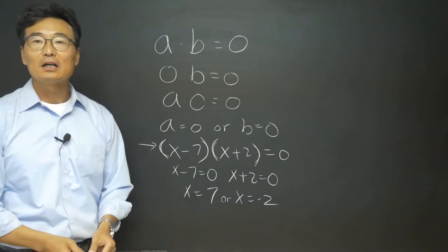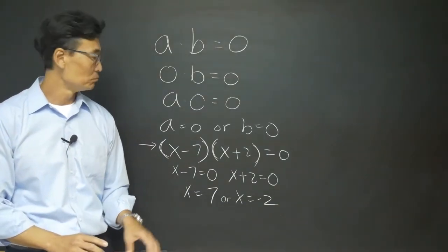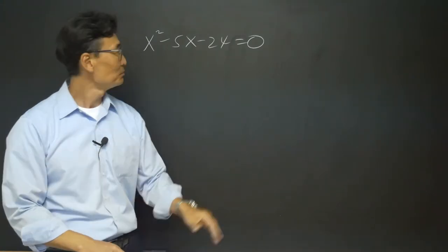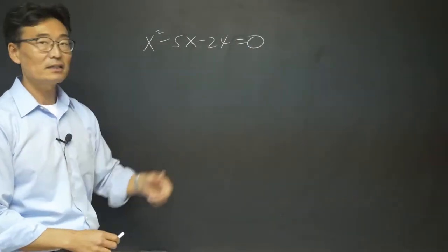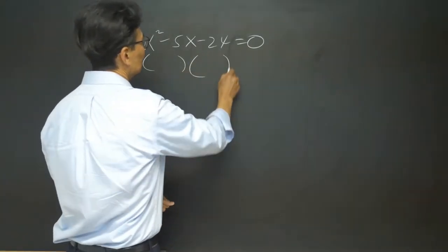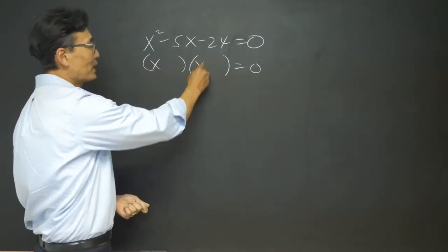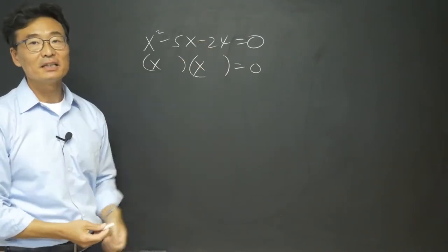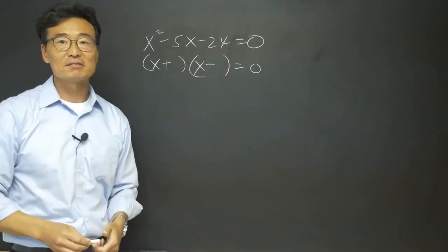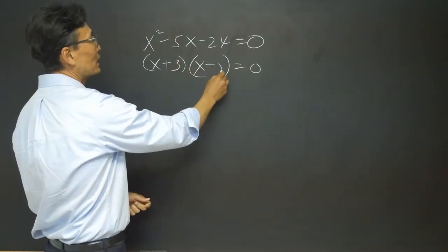Let me do a couple more examples with a quadratic function to show how we could use this. Here's a pretty standard quadratic equation set equal to zero. To solve for x, we're going to first factor this. Factoring x squared minus five x minus 24, we start with x and x. Since the sign of the third term is negative, we go plus and minus, and to get a difference of five, we use three and eight.